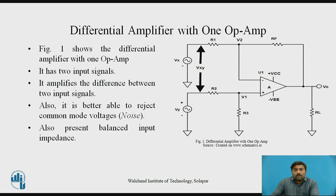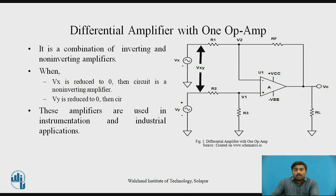Now let's start with the Differential Amplifier with one op-amp. Figure 1 shows this circuit. It has two input signals, Vx and Vy. Basically it is a comparator — it amplifies the actual difference between these two input signals and is better able to reject common-mode voltages, i.e., noise common to both inputs. It presents balanced input impedance and combines both inverting and non-inverting amplifiers in a single circuit.